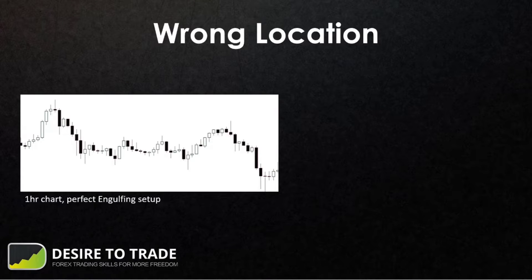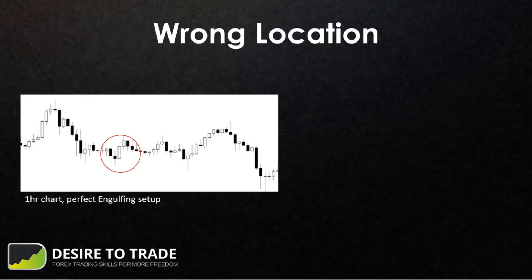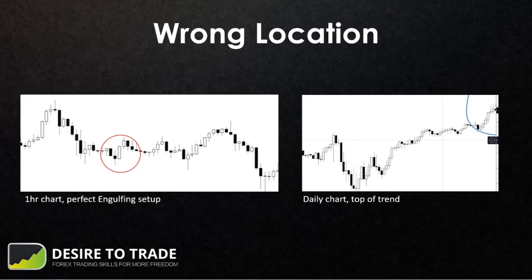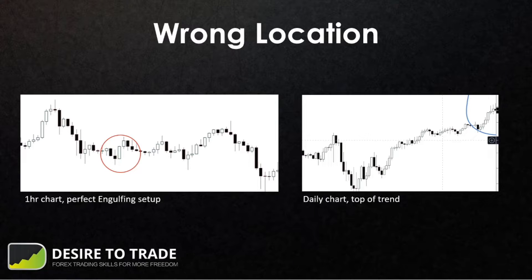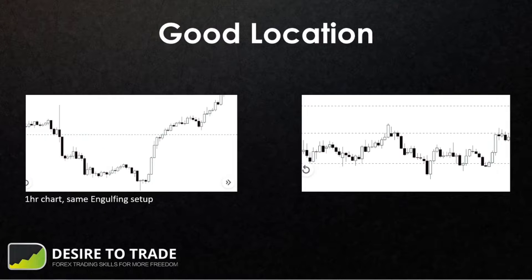Here's an example of a wrong location. On a one-hour chart you have a perfect engulfing candle — that looks really awesome, something I would trade myself. But that setup was taken at the top of a trend on a daily chart, which means the market is exhausted. It's been moving up a lot, and even though it's a nice setup, the top of a trend is not the right place to take that trade.